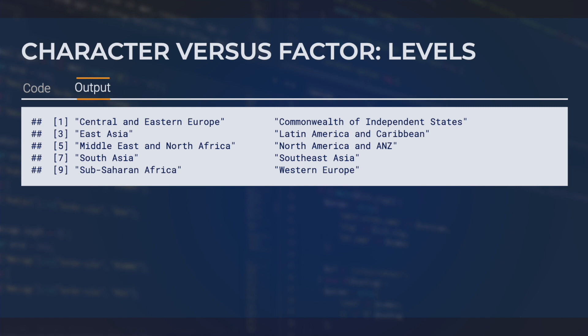Levels can determine the order in which entries appear in a data frame and the order in which objects appear in a plot. Levels also play an important role in statistical modeling. For example, if you were statistically comparing two groups, the levels would determine which of the two groups is the reference one.